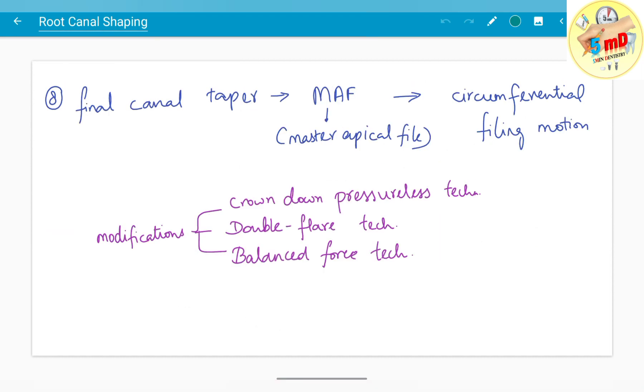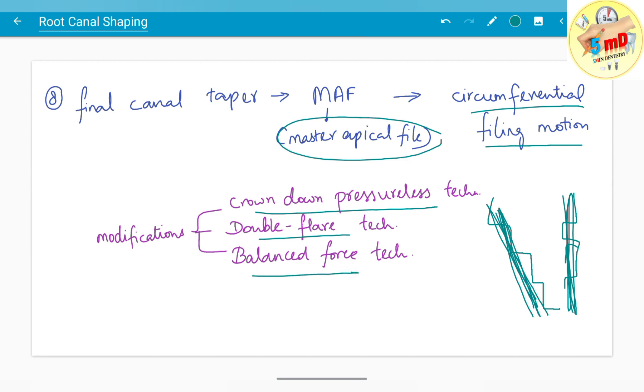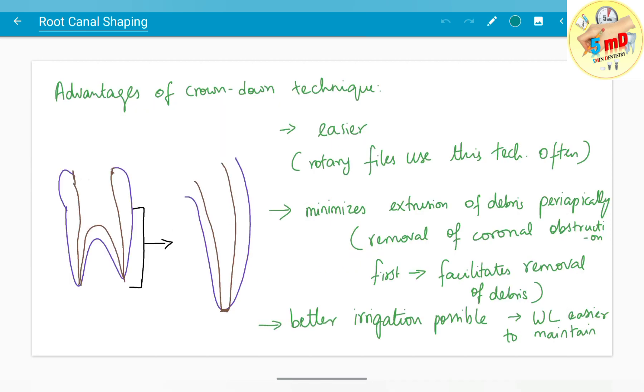The canal taper is determined with the master apical file. Use circumferential filing motion with the master apical file to smoothen out the step down and create smooth walls. Modifications of crown down include crown down pressureless technique, double flat technique, and balanced force technique.